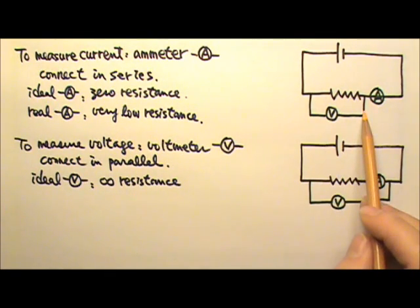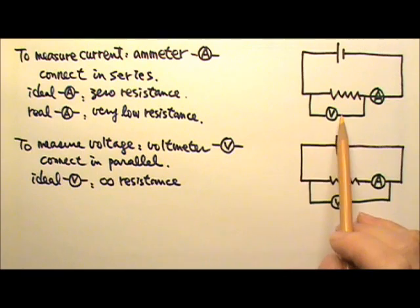So when we add the voltmeter to the system, it would not draw any current from this loop.